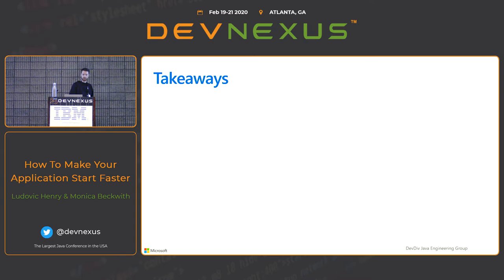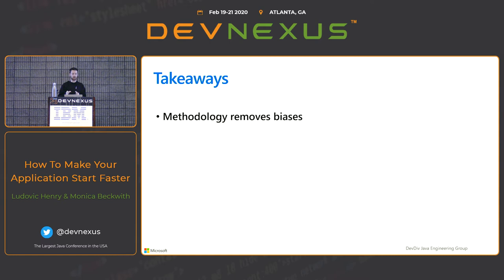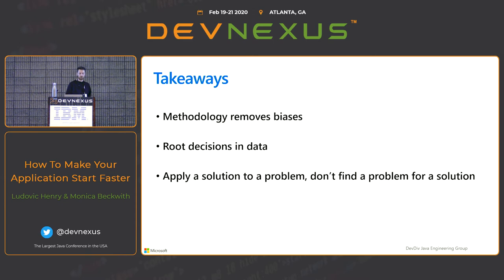Why methodology? Methodology removes biases. If we had just listened to experience, we might have gone directly to AOT compilation because it fixed a problem last time. But maybe the problem is not the same. Methodology roots decisions in data — look at measurements before taking decisions. Apply a solution to a problem; don't find a problem for a solution. AOT compilation is great and does a lot, but it might not work all the time.